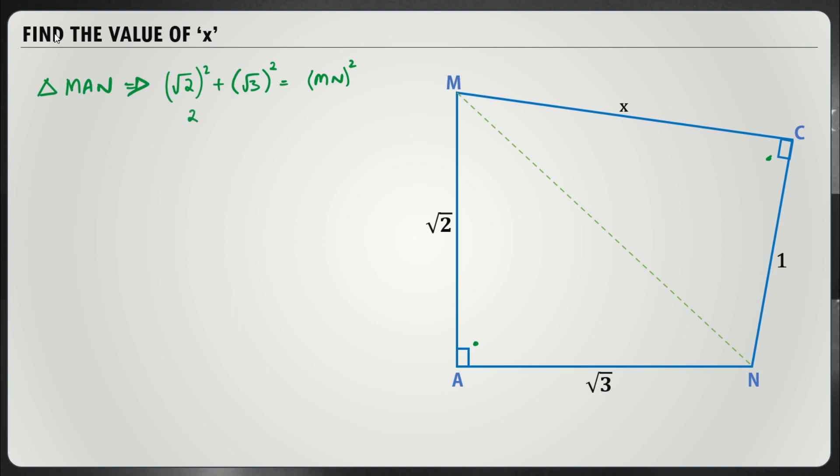So √2 squared is 2 and this is 3. So that's equal to 5. So MN is equal to √5. The length of MN is √5.